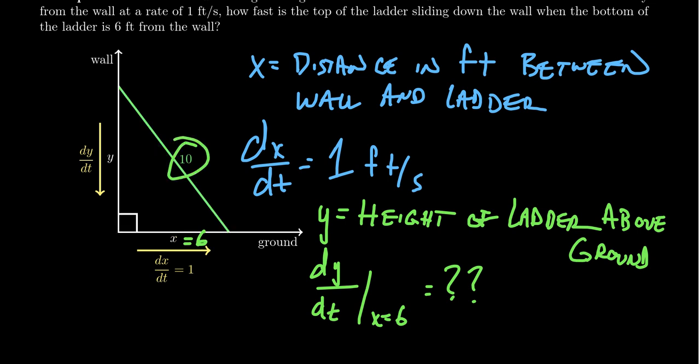This ladder is non-collapsible — it won't change its length as it's falling. So the hypotenuse of the triangle is the ladder, and it's going to be 10 feet long. At this moment in time, if we freeze time, X is six feet from the wall. By the Pythagorean equation, we can relate these quantities: X squared plus Y squared equals 10 squared, or 100.